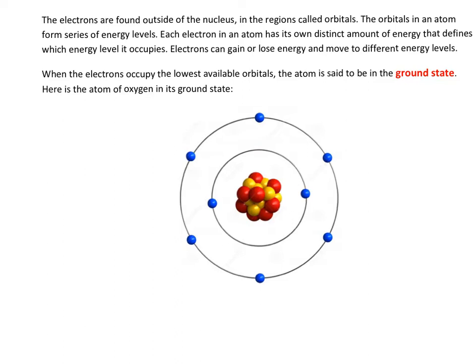Looking at the lowest possible energy level, I can see it holds two electrons. The first energy level of any atom can hold only two electrons, so this energy level is already filled to its brim. Looking at the second level, I see the remaining six electrons located there. They cannot go any lower because the lower level is already completely filled up.